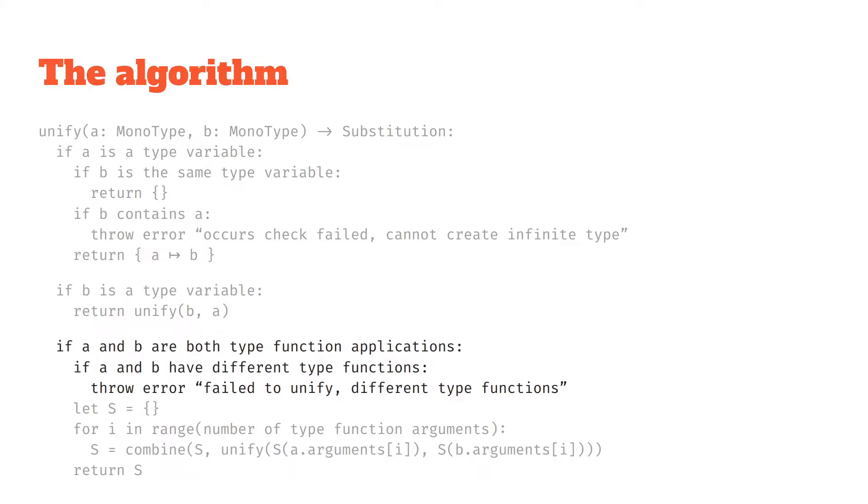Jumping down now to the type function application case, the first kind of two blocks deal with the case that either of them are a type variable, so they have to both not be type variables, and the only other thing for a monotype to be is a type function application.